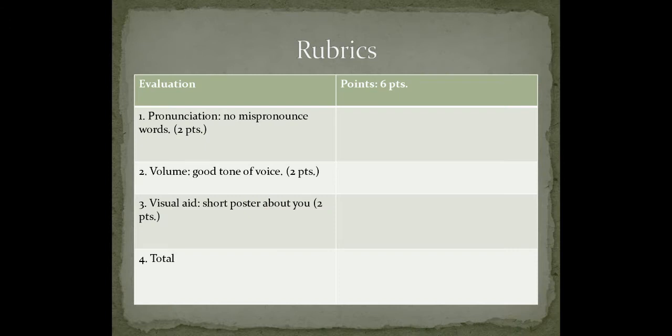Y finalmente está la rúbrica — lo que yo voy a evaluar. I'm going to evaluate pronunciation — que no pronuncies mal las palabras. El volumen — que es un buen tono de voz. La ayuda visual — que es el póster que vas a hacer. Y eso es lo que voy a evaluar en lo que tú me vas a mandar.